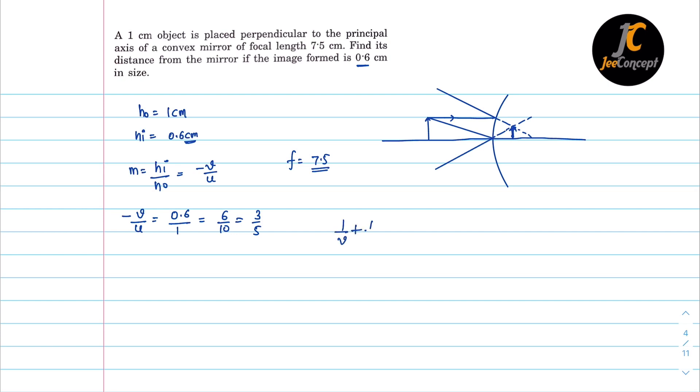So 1 by v plus 1 by u is equal to 1 by f. So we have basically to find u. So v value here that is v is equal to 3 by 5 u with the negative sign. So here we can see 1 by minus 3u by 5.